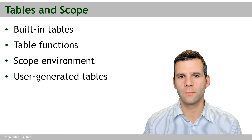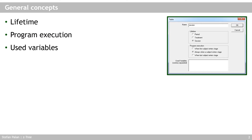Let's start with some general concepts regarding tables. The first is a table's lifetime. The default lifetime of most tables is 'period,' meaning the table is created at the beginning of the period. You create variables in this table — for example, the endowment variable or contribution variable — and at the end of the period, the table is emptied and starts fresh for the next period.